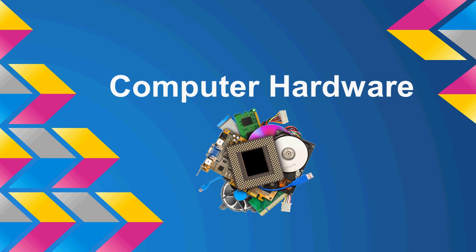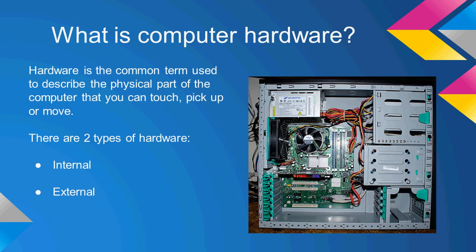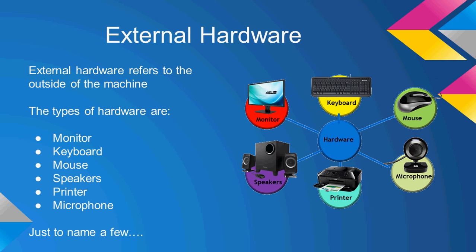During this tutorial I'm going to be talking about what is computer hardware. Hardware is the common term for any part of the computer that you can pick up, touch or move. There are two types of computer hardware: internal and external.